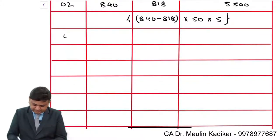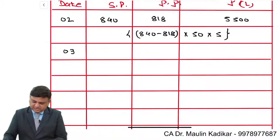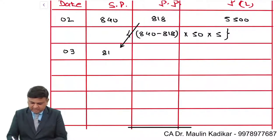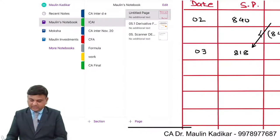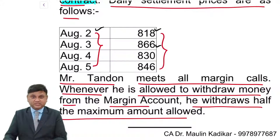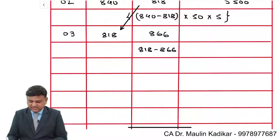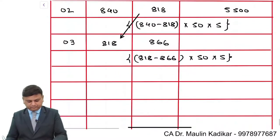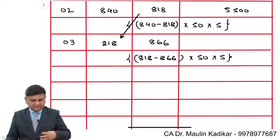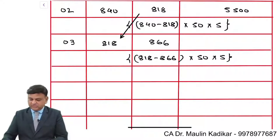On day 3, the revised sale price is 818 and the closing purchase price is 866. So 818 minus 866 into 50 into 5 — that is a loss of 48 into 50 into 5, which is a loss of 12,000.